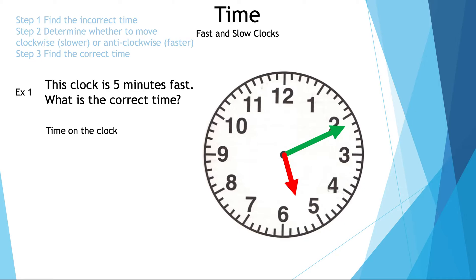Now the hands have joined us. Let's go ahead and read the question: this clock is five minutes fast — what is the correct time? We need to find the incorrect time that is on the clock, and that is 5:11.